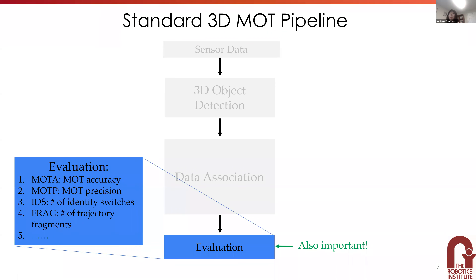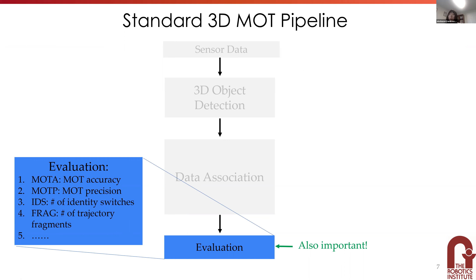Evaluation is also a challenging module because it's difficult in 3D and 2D multi-object tracking to have a single metric covering all aspects we care about. Unlike object detection where people just use average precision, in 3D MOT people historically have many metrics: multi-object tracking accuracy, precision, IDs, identity switches, fragments, ADF1, false positives, false negatives — about 10 or more metrics, with new ones still appearing. This is really an active research area even just for evaluation.